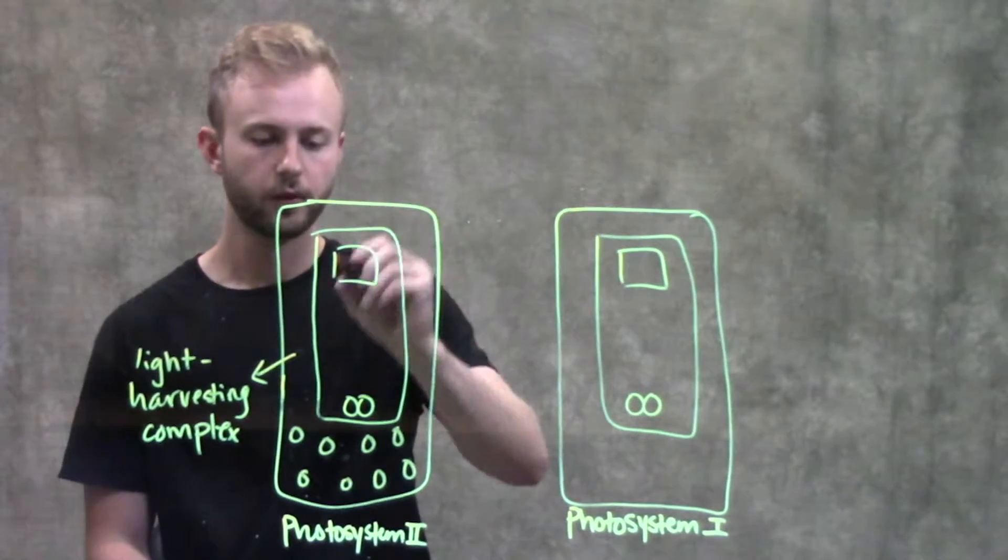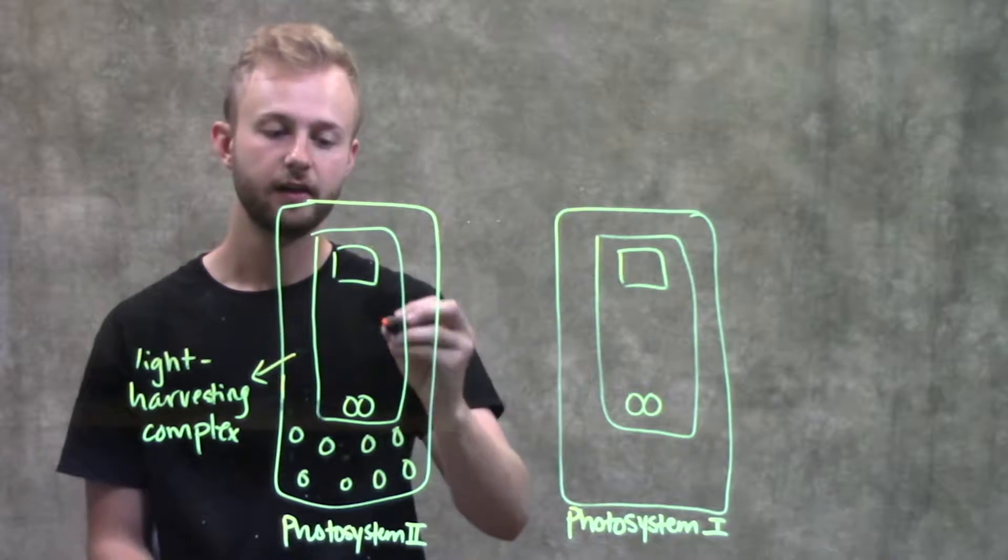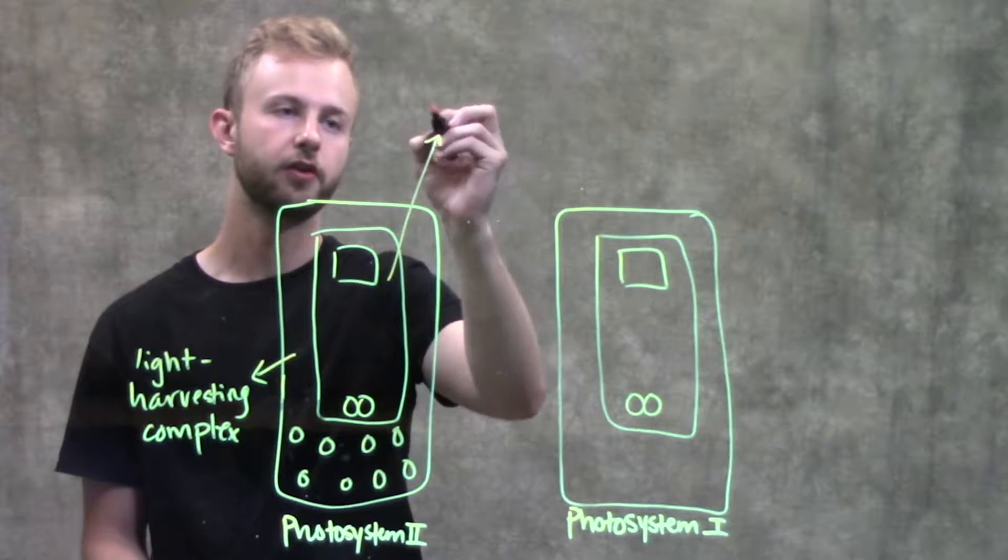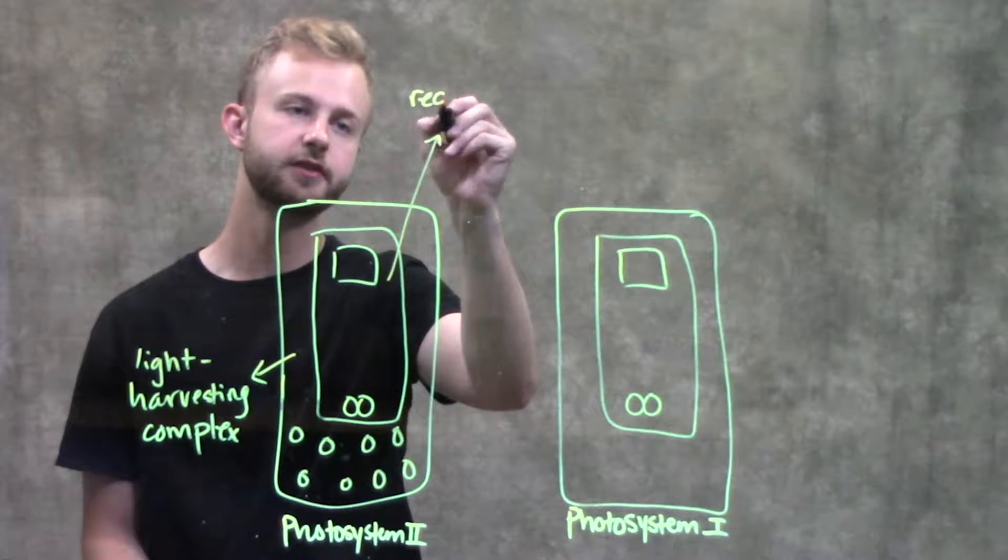Where the electrons really get excited and go on to photosystem one is in this area right here called the reaction center complex.